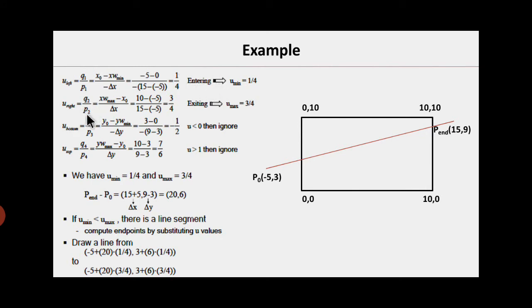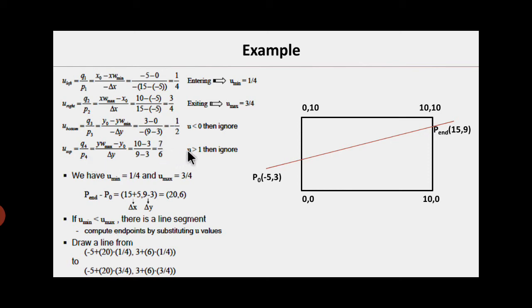For u_right, u2 = q2/p2 = (x_wmax - x0) / delta_x, which comes out to be 3/4. For u_bottom, u3 = q3/p3, which comes out to be -1/2. Since this value is less than 0, we ignore it. For u_top, u4 = q4/p4, which comes out to be 7/6. Since this value is greater than 1, we also ignore it.